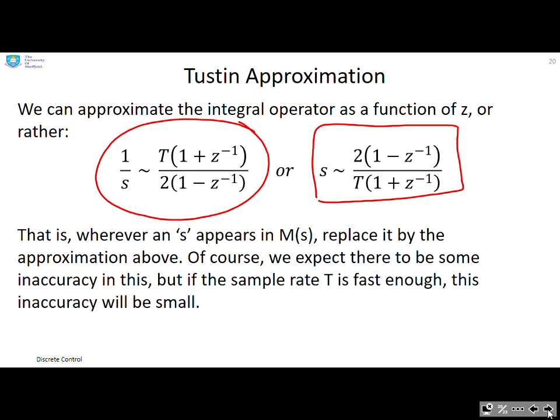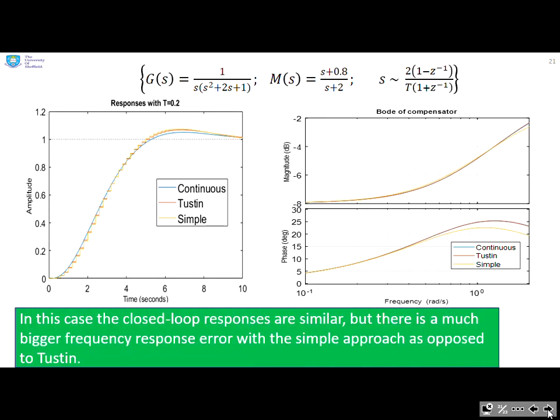So here's the example. And you can see I've compared continuous time, use of the Tustin approximation, and use of the simple approximation. And the most obvious difference is over here on the right-hand side in the Bode diagrams. You can see the Tustin and the continuous are pretty much overlapped, but the simple is down here. There's a much bigger phase error. So the closed-loop responses are similar, but there's a much bigger error with the simple approach as opposed to using Tustin.